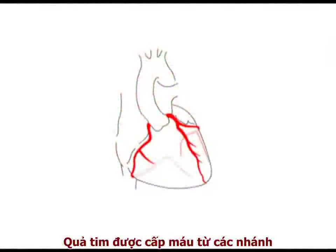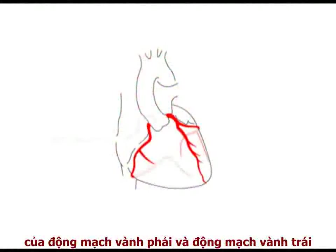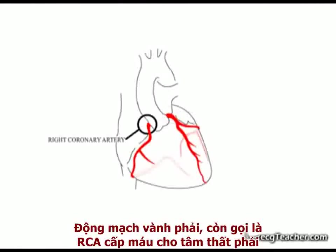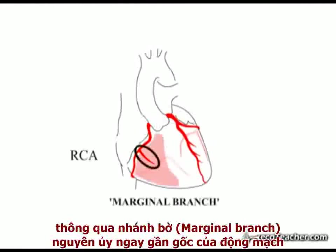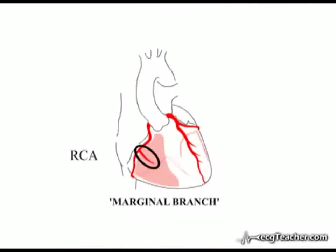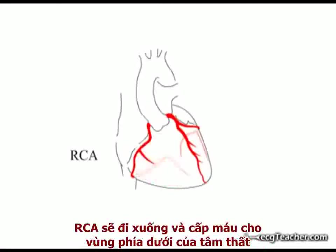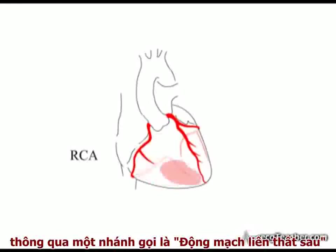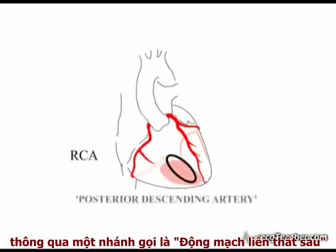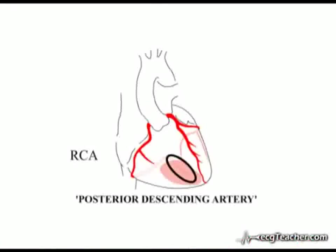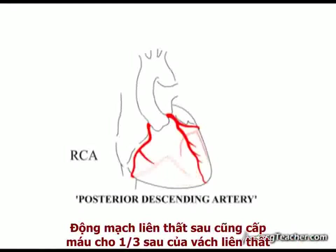The heart is supplied with arterial blood by the branches of the right and left coronary arteries. The right coronary artery, or RCA, supplies the right ventricle through a marginal branch which arises near the origin of the vessel. In 90% of individuals, the RCA then goes on to supply the inferior surface of the ventricles through a branch called the posterior descending artery. This posterior descending branch also supplies the posterior one-third of the interventricular septum.